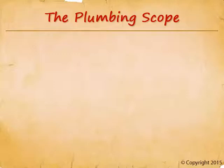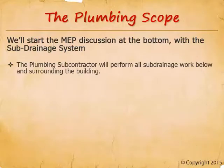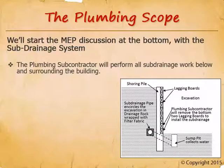Now we'll move into the most technical trades: mechanical, electrical, plumbing, and fire sprinkler. Starting with the sub-drainage system at the bottom of the building: the plumbing subcontractor completes all sub-drainage work below and immediately adjacent to the building — typically a 4-inch perforated pipe in a 12-inch by 12-inch bed of drain rock surrounded by filter fabric. Sub-drains are within 5 feet of the building, so they belong to the plumbing sub, not the site utility subcontractor, as is sometimes mistaken.